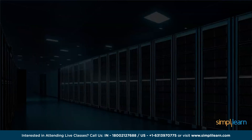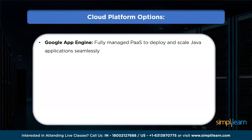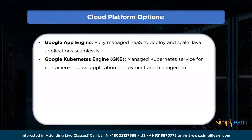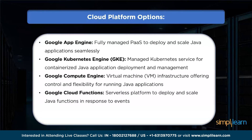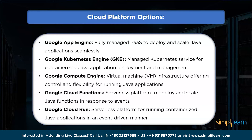Let's explore the different cloud platform options. Google App Engine is a fully managed platform for deploying and scaling applications without worrying about infrastructure management. Google Kubernetes Engine is a managed Kubernetes service for deploying, managing, and scaling containerized applications. Google Compute Engine provides virtual machines for running applications with control over infrastructure configuration and scalability. Google Cloud Functions is a serverless execution environment where you can deploy Java functions that automatically scale based on event triggers. Google Cloud Run is a serverless platform that allows you to run containerized applications in an event-driven manner.